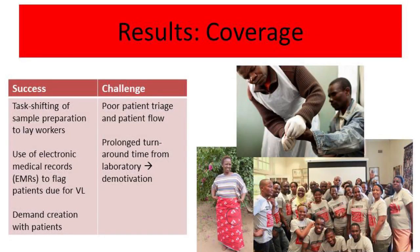Key success factors for good coverage included: task shifting of sample preparation to lay workers, so non-clinical staff were trained to prepare samples. Electronic medical records flagged patients due for viral load, alerting nurses or clinicians to collect samples. Demand creation with patients was also important — through civil society and patient education, patients themselves would remind clinicians that their viral load was due, and civil society pushed service providers to ensure viral load was offered.